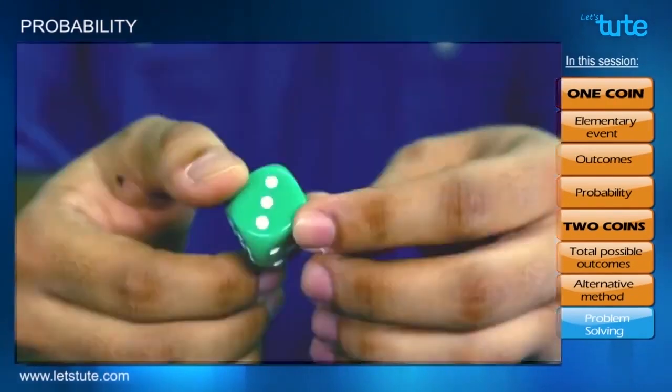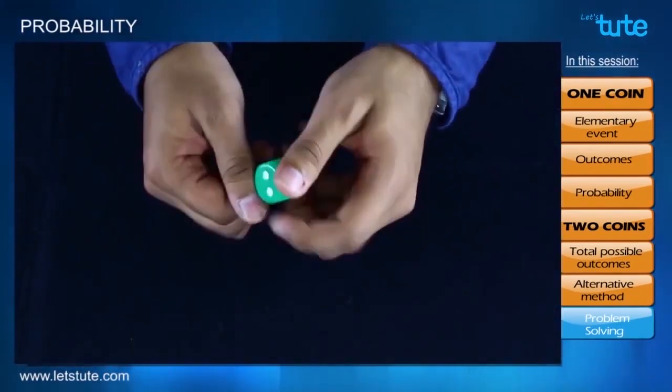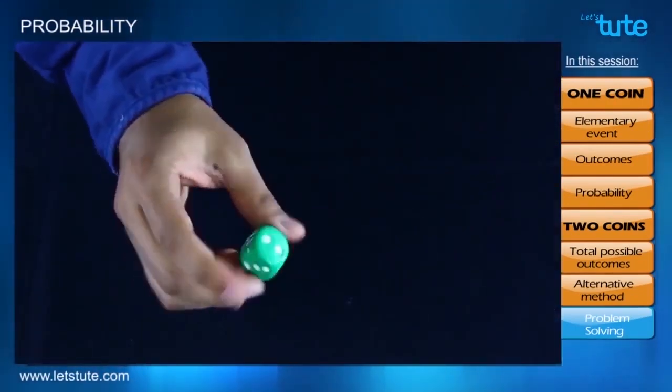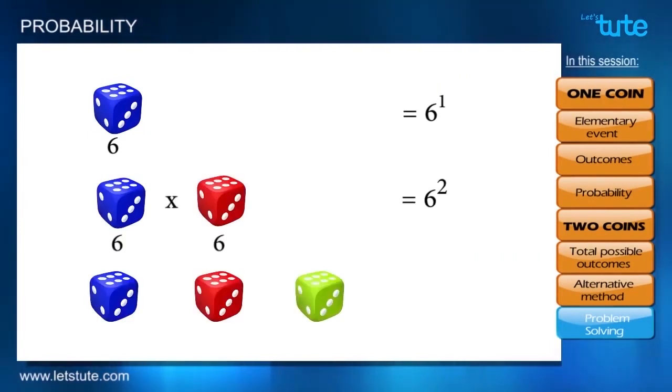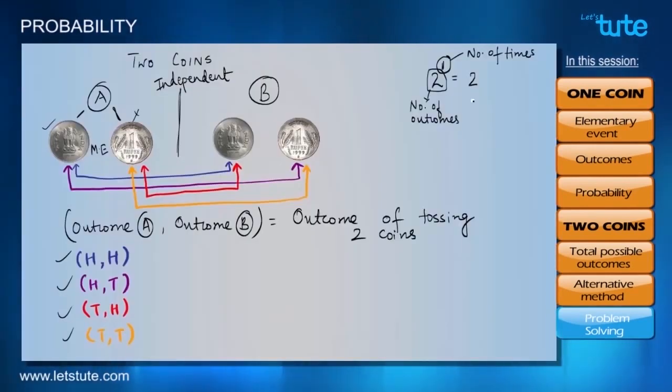Similarly, in case of a die, we know that there are 6 sides to 1 die. So, these are the 6 possible outcomes. It is nothing but 6 raised to power 1. Similarly, if we are throwing 2 die, then we will multiply the outcomes from both. And 3 dies again, it will be 6 multiplied by 6 multiplied by 6 equal to 6 cubed. So, we have to remember this particular method in order to calculate the total possible outcomes faster.